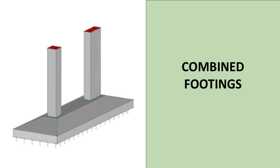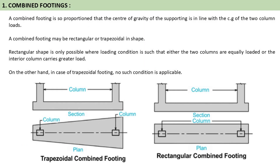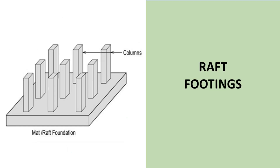Now let's discuss combined footings. A combined footing may be rectangular or trapezoidal in shape, as you can see in the picture. A rectangular shape is only possible where the loading condition is such that either two columns are equally loaded or the interior column carries the greater load. In case of trapezoidal footing, no such condition is applicable.